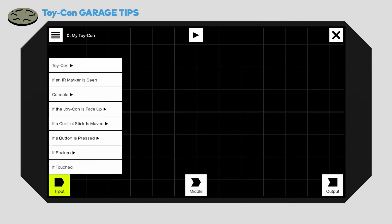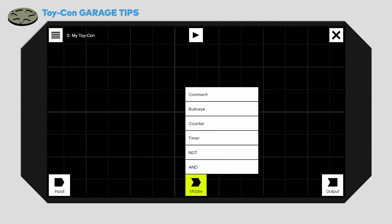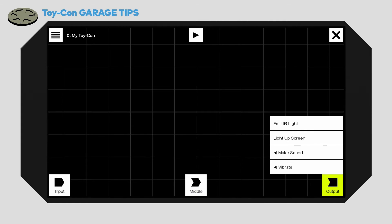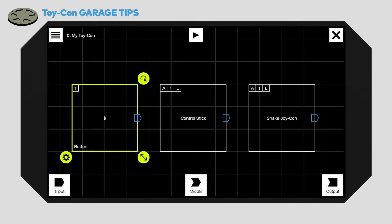Middle nodes let you add elements, such as counters or timers, in between your input and output nodes. Then, use output nodes to make something happen, like lighting up the screen or playing a sound.